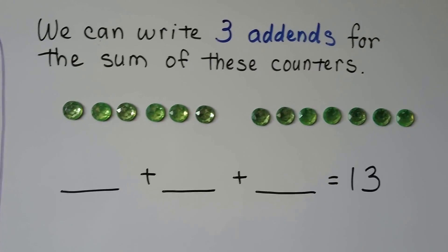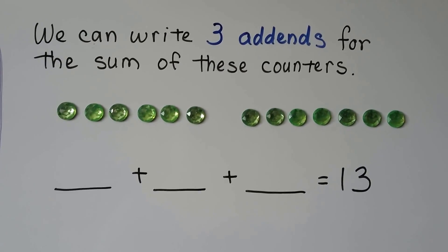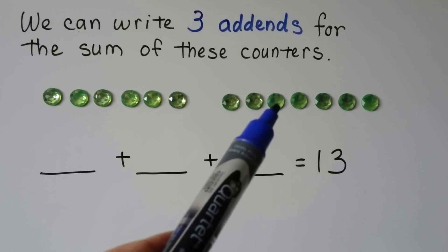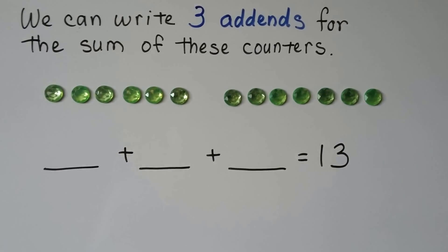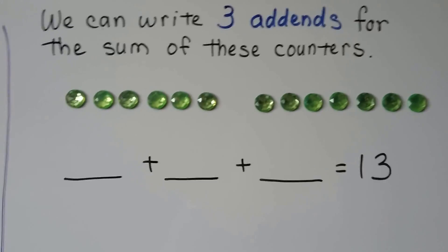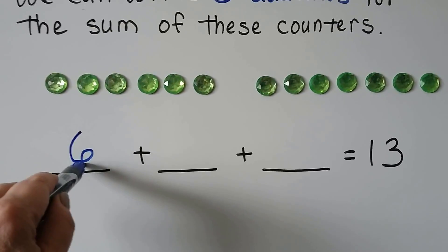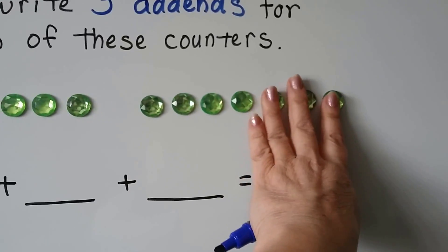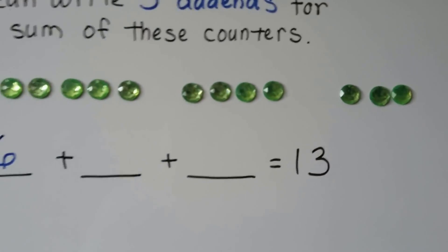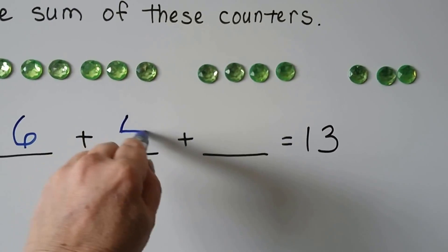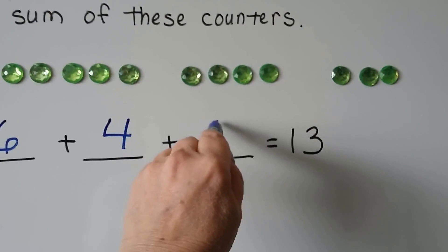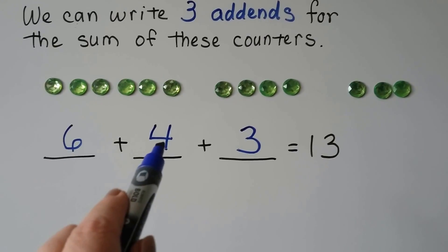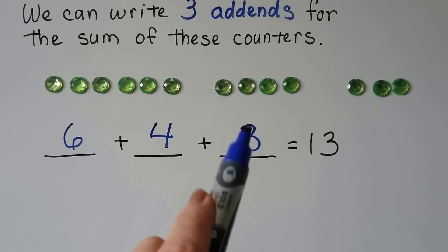We can write 3 add-ins for the sum of these counters. We have 6 counters here and 7 counters here. We can put 6 and split these up — break it apart like that and make 3 add-ins. We can make a 4 and a 3. It's the same number of counters. We have 6 plus 4 — that's 10 — then 11, 12, 13 counters.